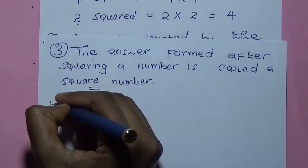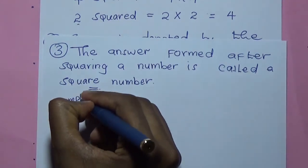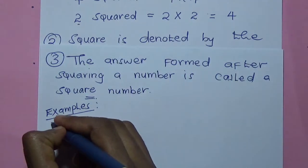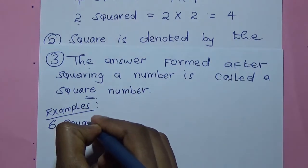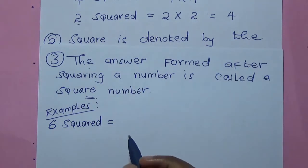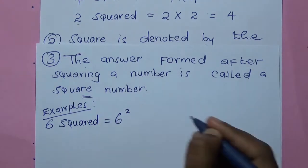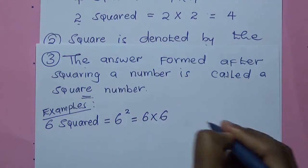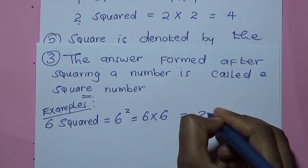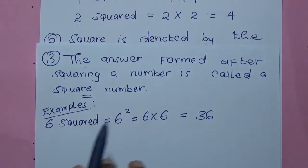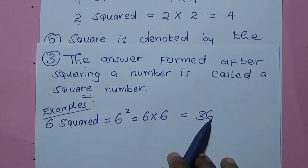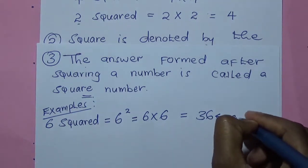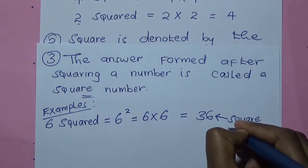Now we look at examples. We have 6 squared, which can be written as 6 with a small 2 on top, which means you multiply 6 by itself to give you 36. So 6 squared gives you 36. This 36 is the answer, and 36 is the one that we are calling the square number.